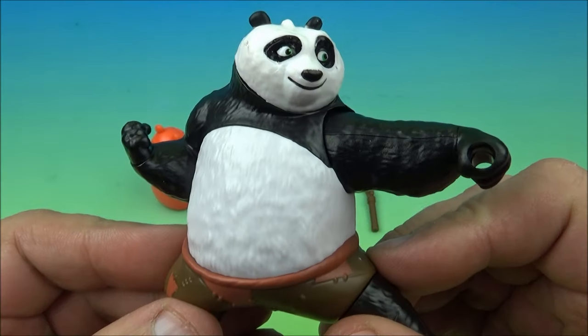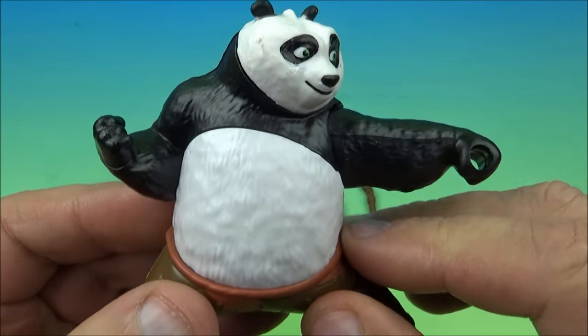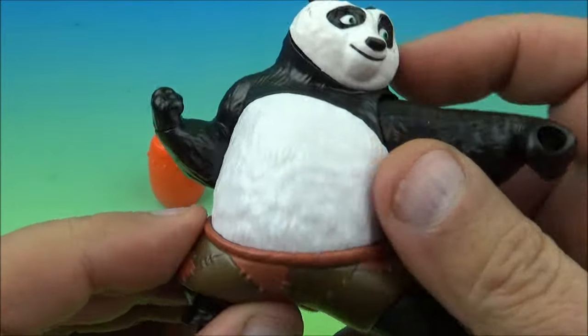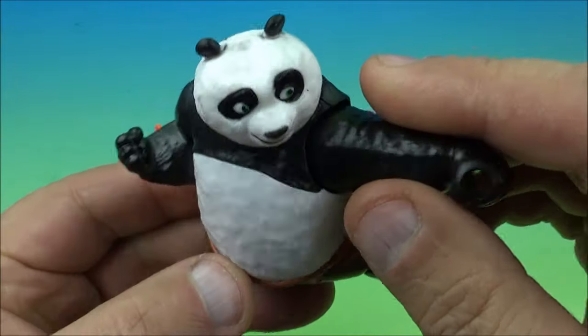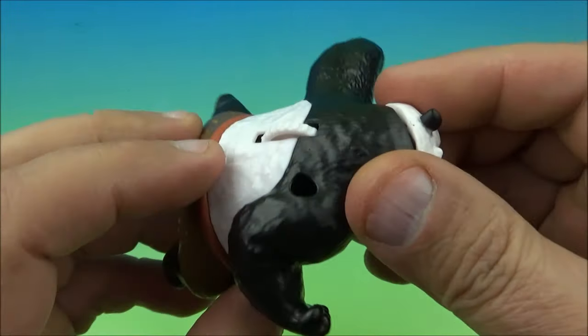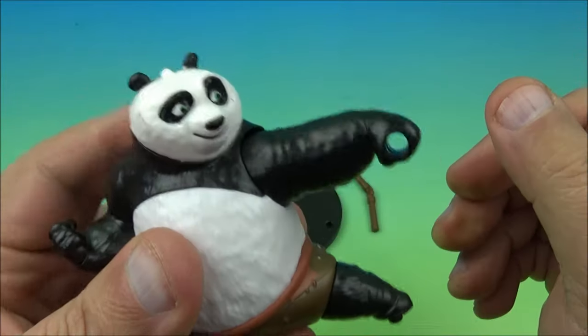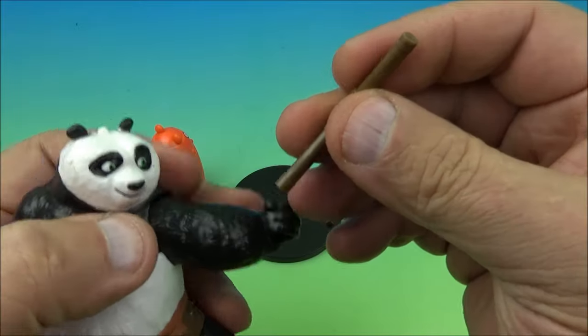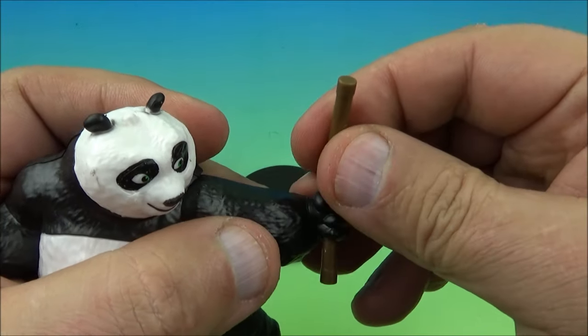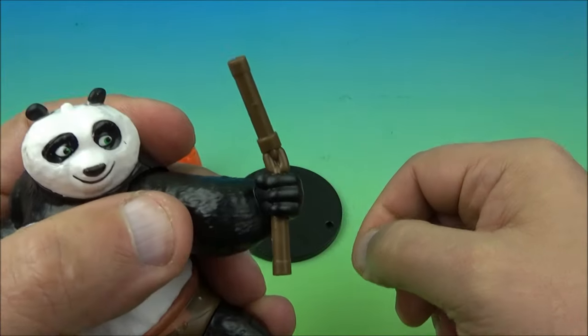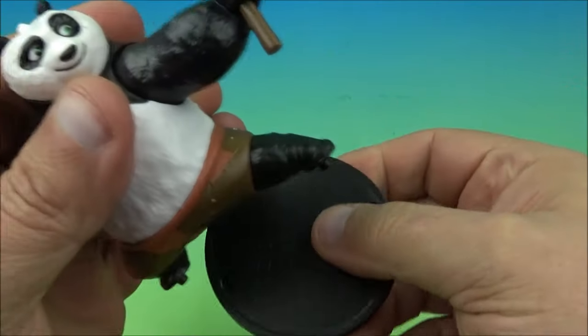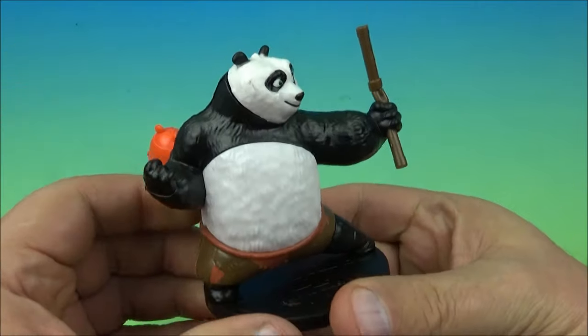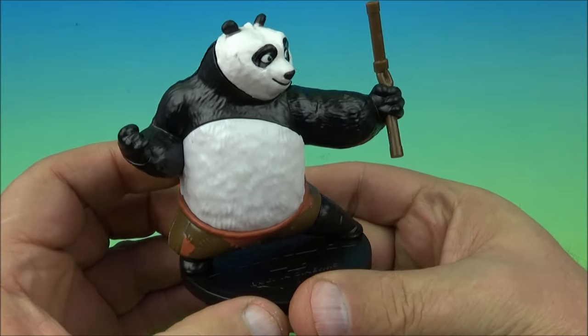And last up in the set we have Po who looks fantastic. Let's give you a little spin here, let you take it all in with your cute little eyeballs. There we go, give you the old 360. And on the back you can see the little wheel there, that's part of the gimmick - you spin his arm around. So what you do is you take his little accessory, his little nunchuck, and you slide it into his hand just like so. Now he's holding it. And then it comes with this cool little base, you place Po and tab him onto his little base here like that. So now he looks even more awesome.